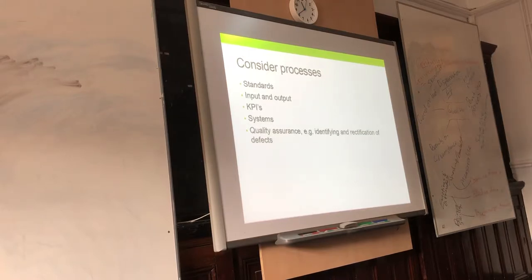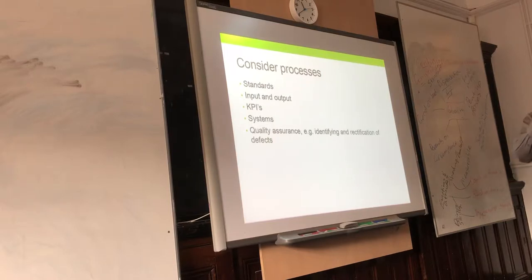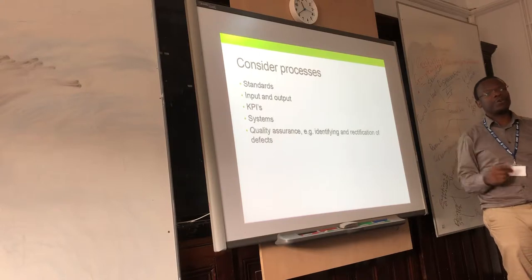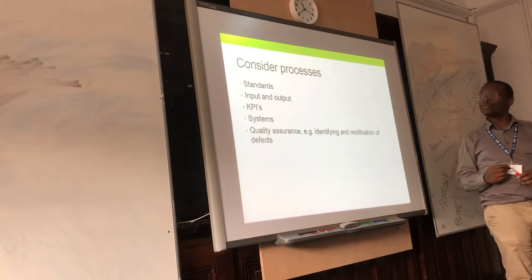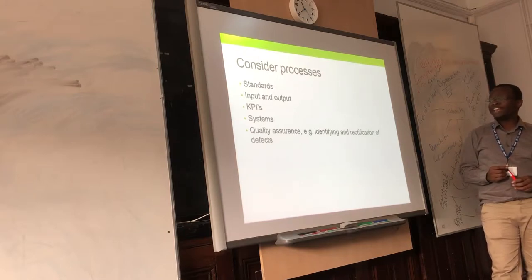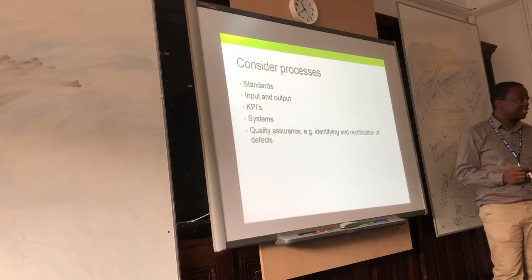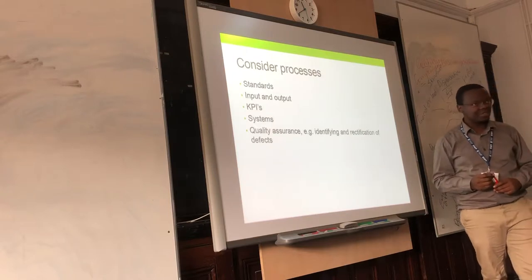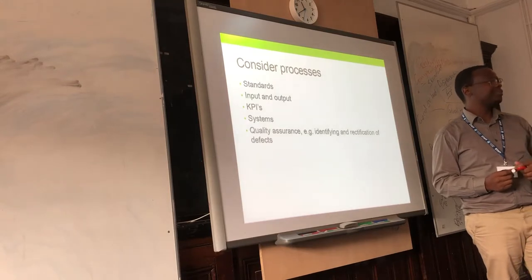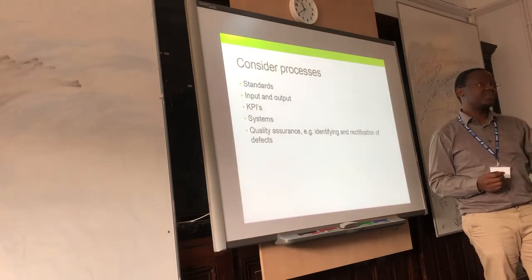You also need to look at systems — how different components are working together towards the same goal, how different departments are working together for a common purpose. That's the definition of a system. And then you have quality assurance: you need to identify and rectify any defects in your processes. Don't wait for things to go horribly wrong — correct them as you go, make amendments and adjustments as you go.